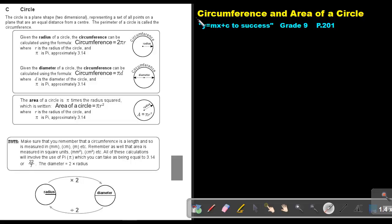Part 4: The circumference and the area of a circle. You will find this on page 201 in the Namibia Mathematics Grade 9 textbook, Y equals mx plus c to success.